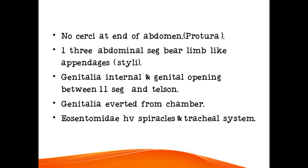No cerci at the end of abdomen — this is a special character of Protura. Three abdominal segments bear limb-like appendages known as styli. Genitalia are internal and the genital opening is between the 11th segment and telson. Genitalia are everted from the chamber. Eosentomidae have spiracles and a tracheal system.